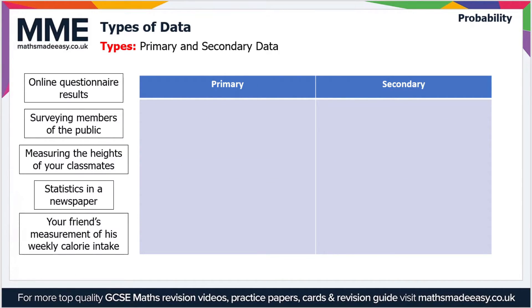Moving on, there are two other types of data to look at: primary and secondary data. Primary data is anything that you've collected yourself, and secondary data is anything that's been collected by anyone else. It's pretty straightforward.